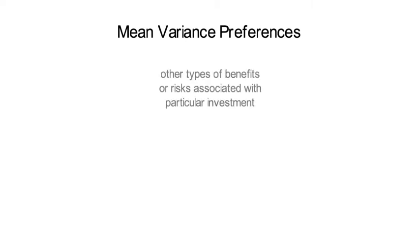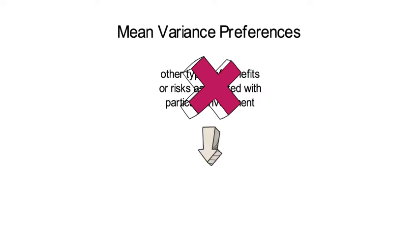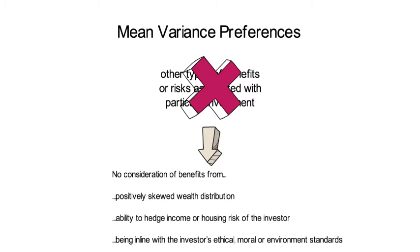I find it important to highlight that other types of benefits or risks that are associated with a particular investment are ignored by mean variance preferences. So benefits that arise from a positively skewed wealth distribution or from the ability to hedge income or housing risk of the investor or from being in line with the investor's ethical, moral or environmental standards are not considered.